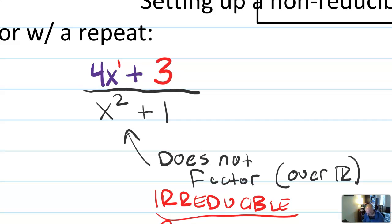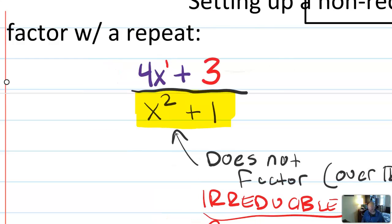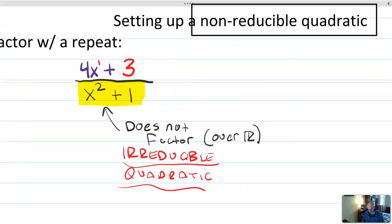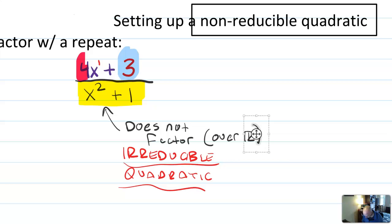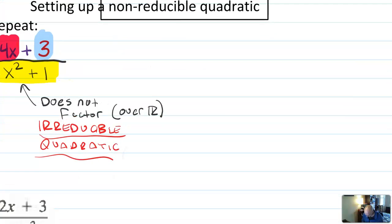So if we're setting up a partial fraction decomposition and I see a factor like this on the bottom, that's an irreducible quadratic, and I've tried to factor and it doesn't factor, then when I set this up, I need to account for both the possibility of a number and the possibility of a variable with an x coefficient. So here's how that sets up.